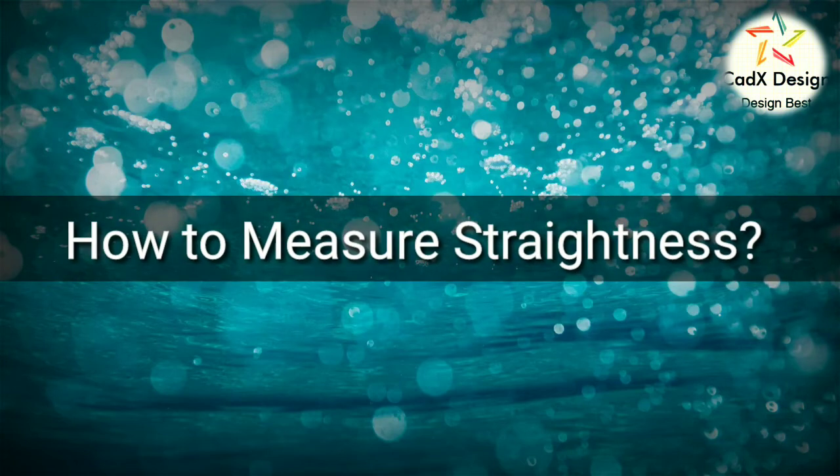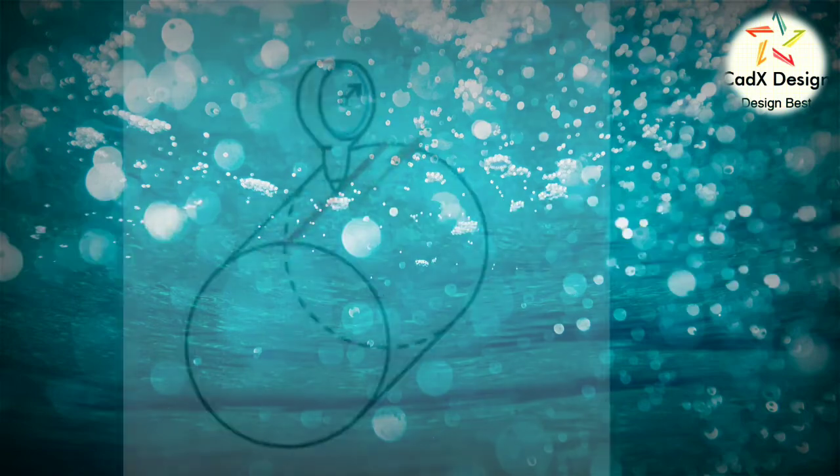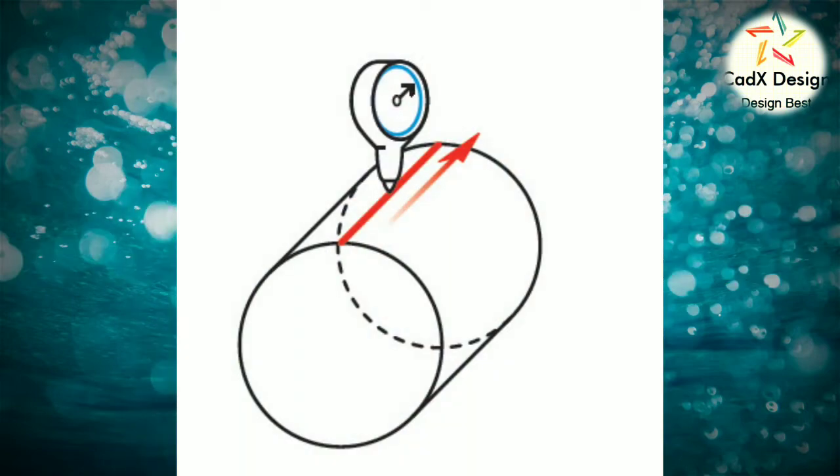Now how to measure straightness. First surface straightness: A part is constrained and a gauge measures along a straight line. In this example the height variance is measured to see how flat or straight the line is along this surface.